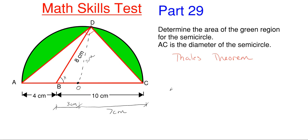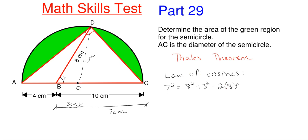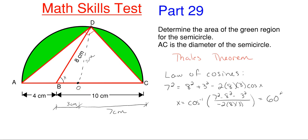Using the law of cosines to find angle X: the side opposite angle X is 7 centimeters, so 7² = 8² + 3² − 2(8)(3)cos(X). Rearranging: X = cos⁻¹((7² − 8² − 3²) / (−2 × 8 × 3)). This gives an angle of exactly 60 degrees.